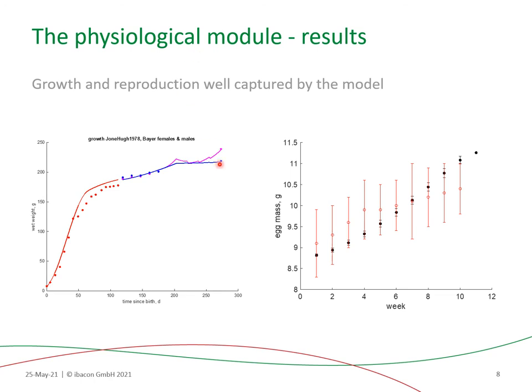In the second part, we have a blue and red line from the OECD control data. The right plot shows the predicted mean mass of the eggs as a function of experimental week, where we assume the maternal effect rule. As we can see, both the growth and egg mass patterns of the control organism are well predicted by the physiological module.